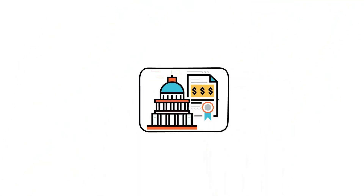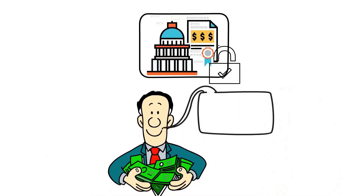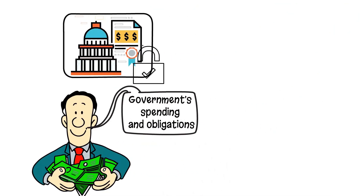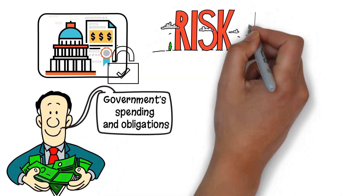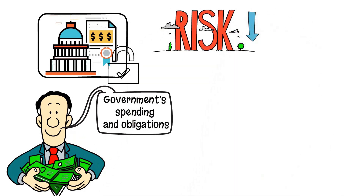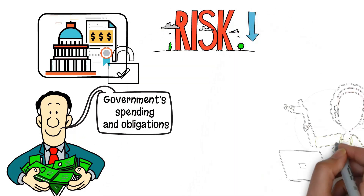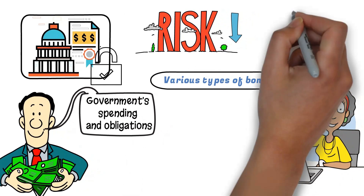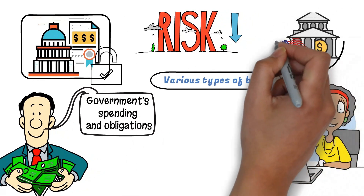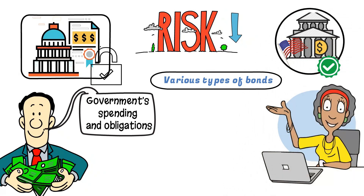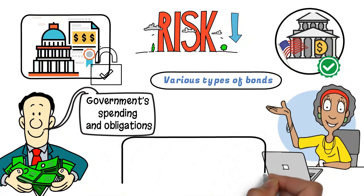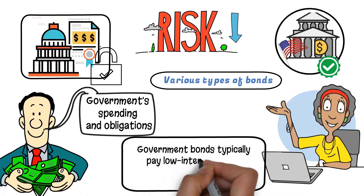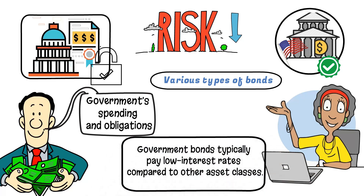A government bond is a debt security that's issued by a government to support the government's spending and obligations. Government bonds are considered low-risk investments since it's the government that backs them. The ones offered by the U.S. Treasury are considered to be among the safest in the world. Because of their relatively low risk, government bonds typically pay low interest rates compared to other asset classes.